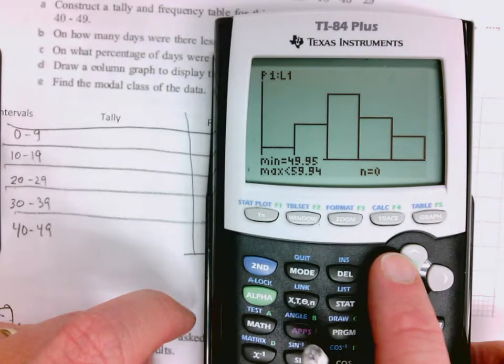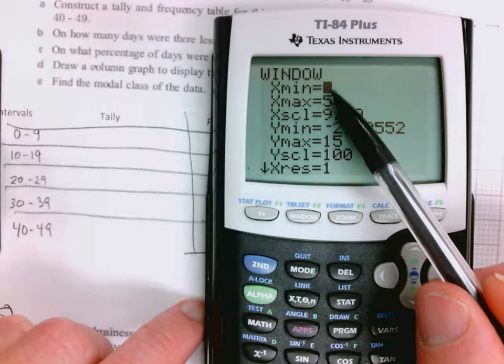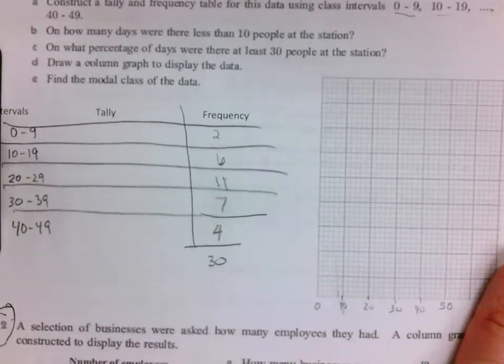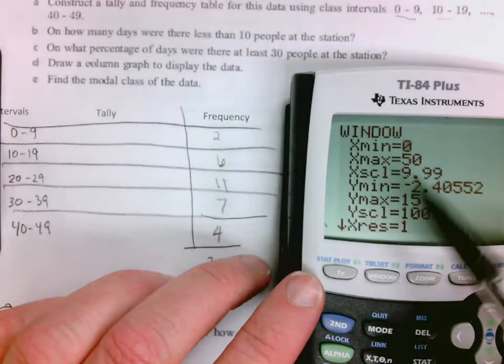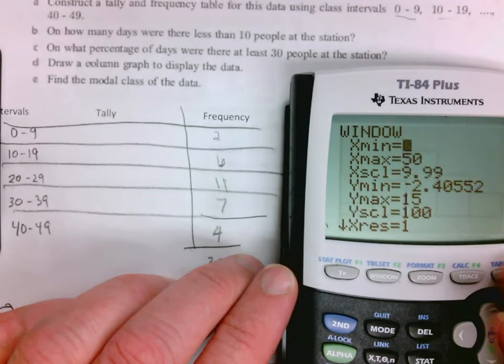But you have to play around with that window. So again, I went to the window 0 to 50—that's the whole graph, that's my whole x-axis. And then this is the width of my interval. If you do that, you should be fine and your graph matches up.